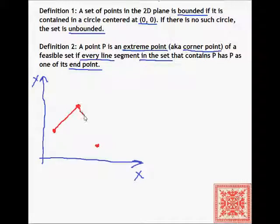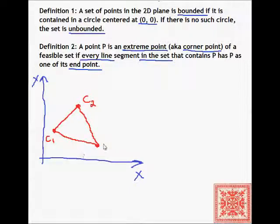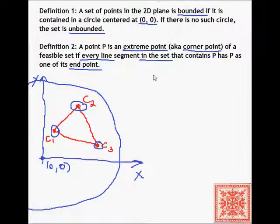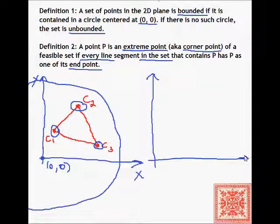This is our triangle-like feasible set with corner points C1, C2, and C3. This is the origin zero, zero. We can find a circle of some radius centered at zero, zero that includes the entire feasible set, which is why it is bounded.